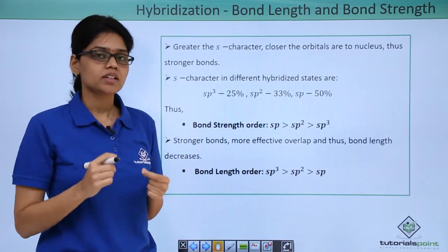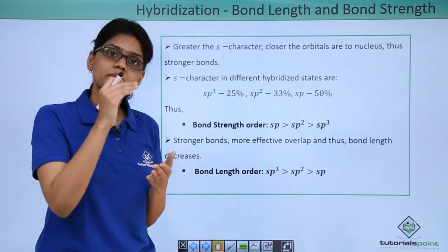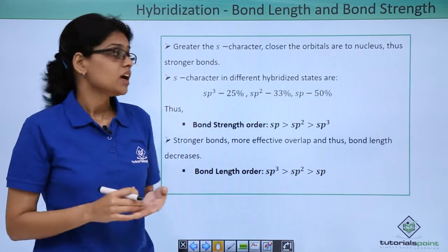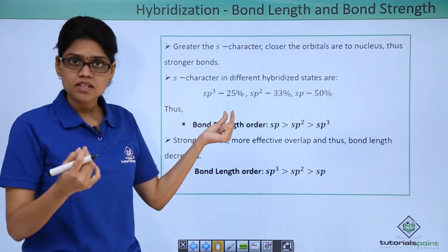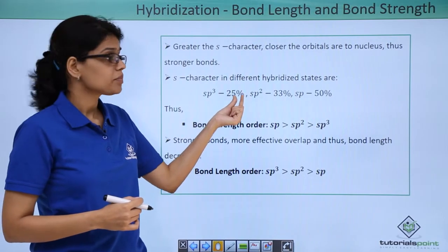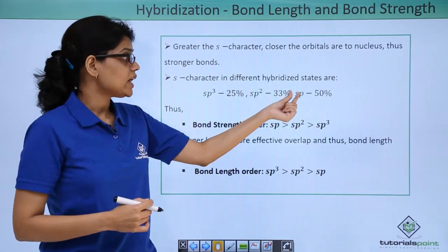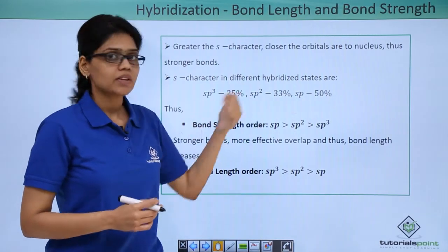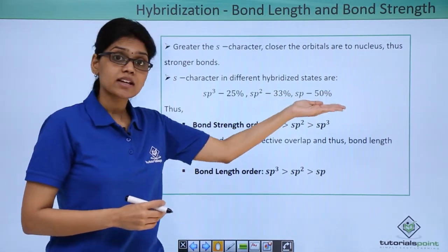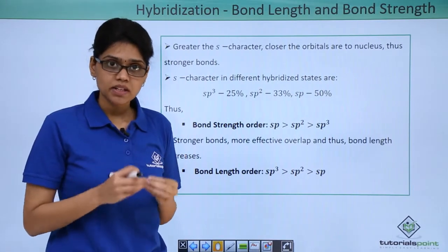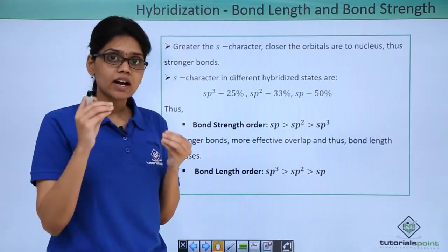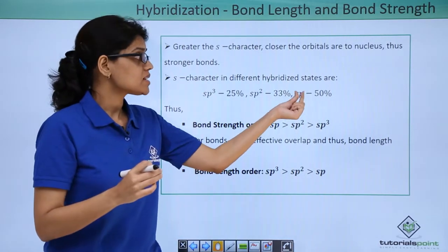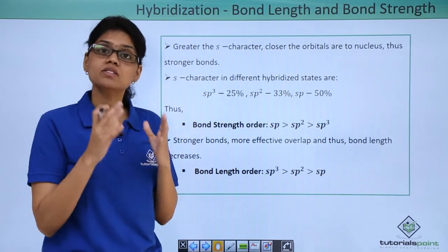Another important thing to remember is the percentage of s character in various hybridization states. In sp3 the percentage of s character is 25%, sp2 has 33%, while sp has 50% s character. From this we can see that sp has maximum s character, which means the hybridization states of those atoms with sp hybridization will be strongest.